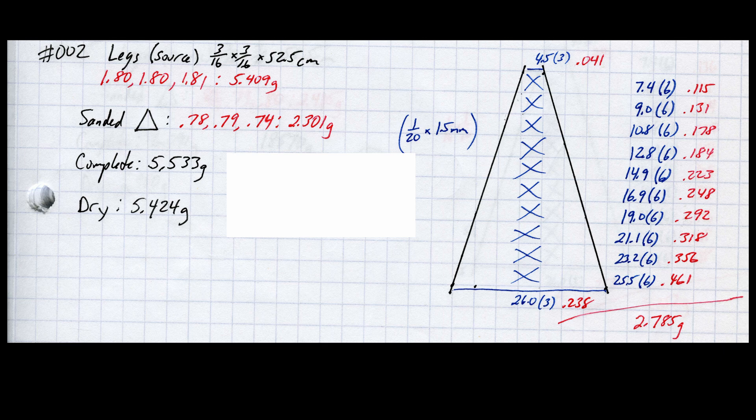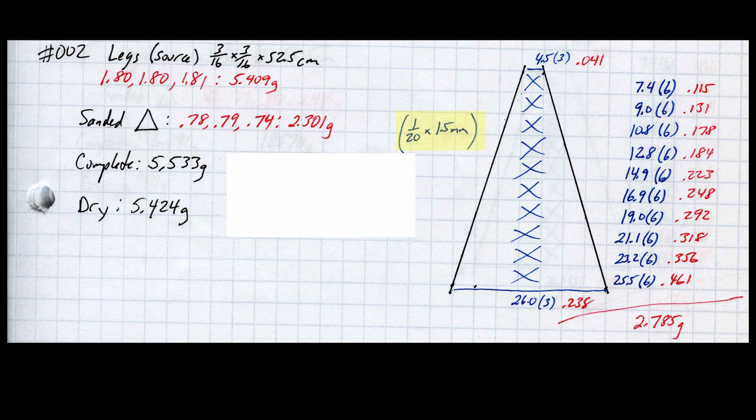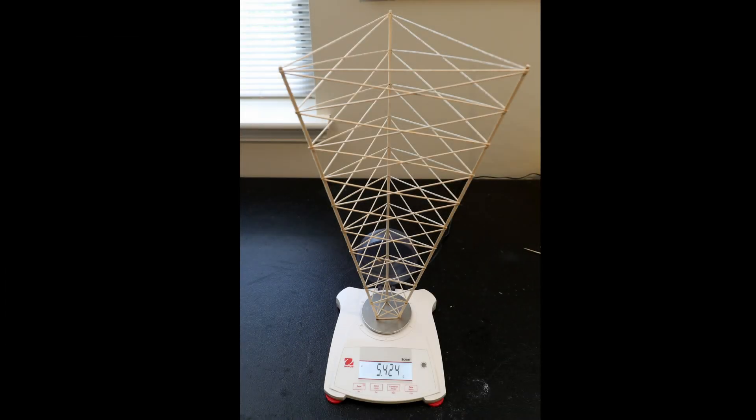For the second build, I decided to decrease the mass of both the legs and the cross bracing. I dropped the leg mass by about 20% and the cross bracing material by about 18%. I also changed the size of the cross bracing to be 1/20th by 1.5 millimeters. As expected, the total mass of this complete build was about 20% less than the previous build and hit the scale at 5.424 grams. Let's see how this one does.